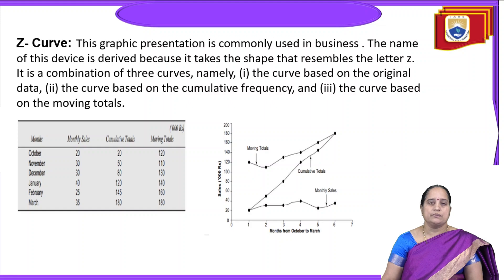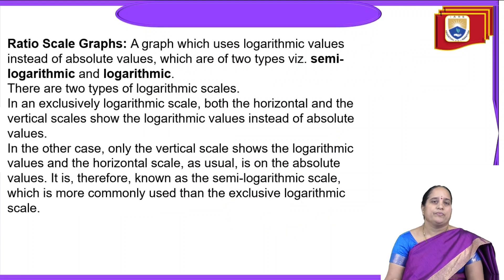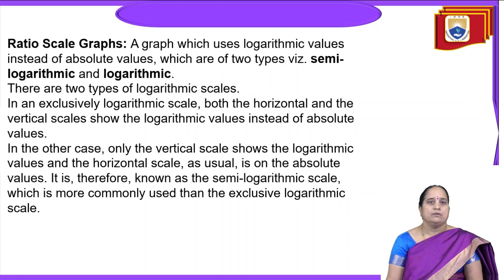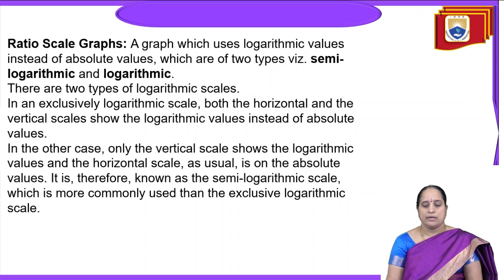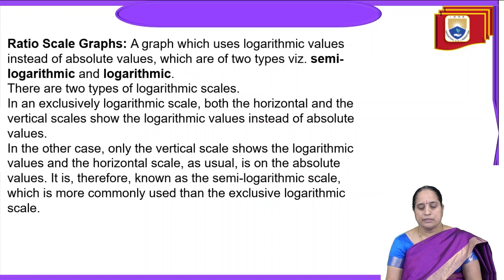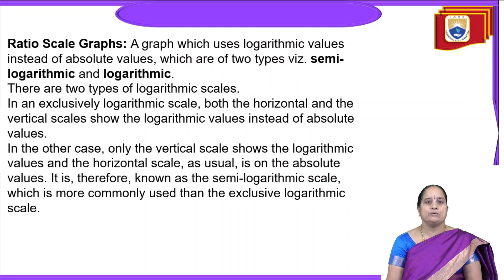The next category is ratio scale graphs — graphs which use logarithmic values instead of absolute values — which are of two types: semi-logarithmic and logarithmic. In an exclusively logarithmic scale, both horizontal and vertical scales show logarithmic values instead of absolute values. In the semi-logarithmic scale, only the vertical scale shows logarithmic values while the horizontal scale shows absolute values. Therefore, the semi-logarithmic scale is more commonly used than the exclusive logarithmic scale.